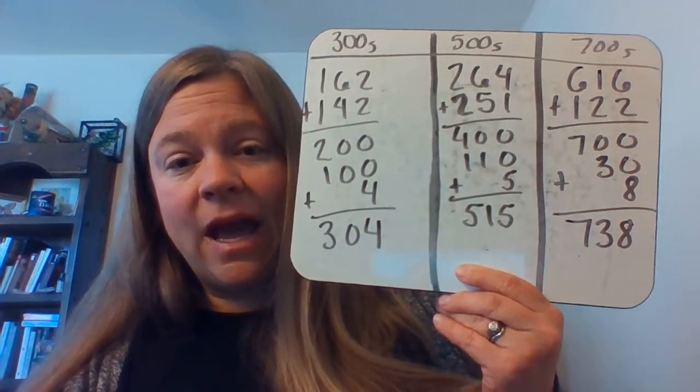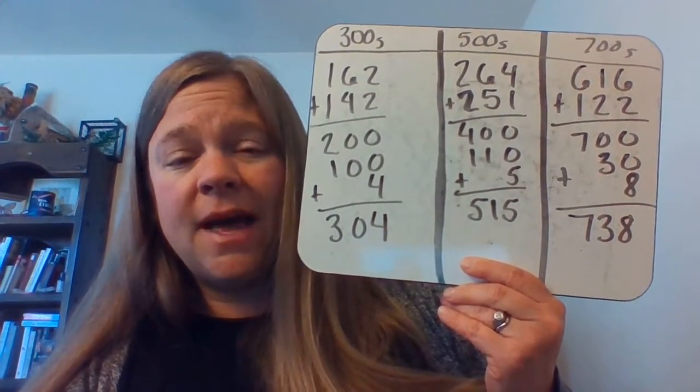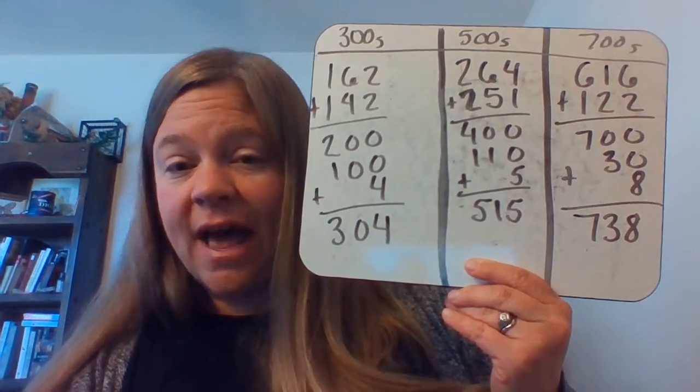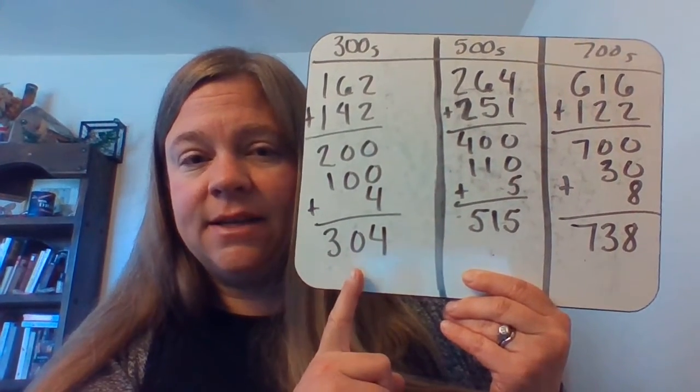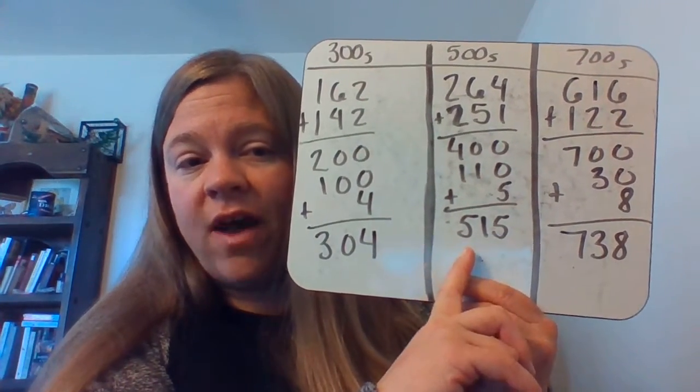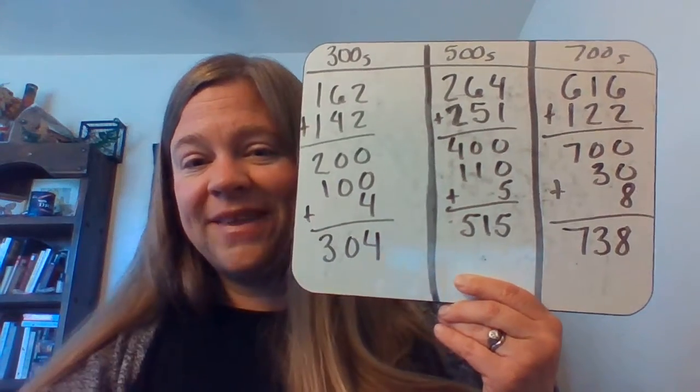So today, I want you to come up with three partial sums adding problems on your own. And your challenge is to get them to land somewhere in the 300s, one of them, one of them somewhere in the 500s, and then one of them somewhere in the 700s. Okay? Happy mathing!